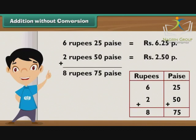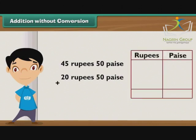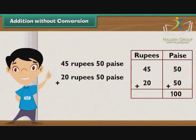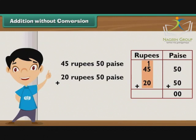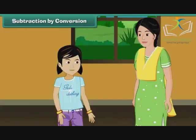Now take another example. Add 45 rupees 50 paise and 20 rupees 50 paise. Step 1: Add the numbers in the paise column — 50 plus 50 is equal to 100 paise. We know that 100 paise is equal to Rupee 1. So write 00 in the paise column and carry forward 1 to the rupee column. Step 2: Add the numbers in the rupees column — 1 plus 45 plus 20 is equal to 66 rupees. Write 66 in the rupees column. So the answer is 66 rupees.